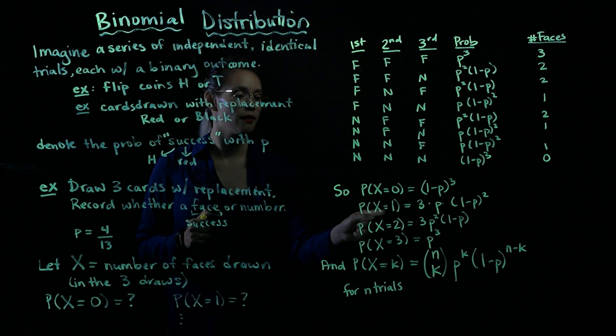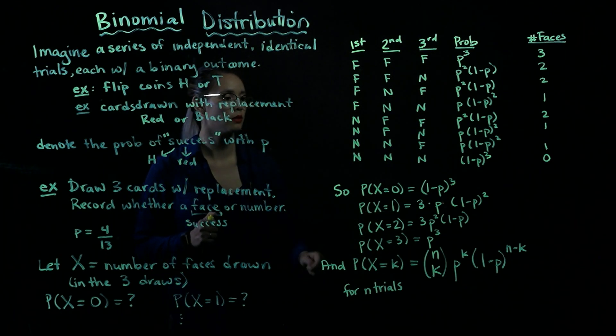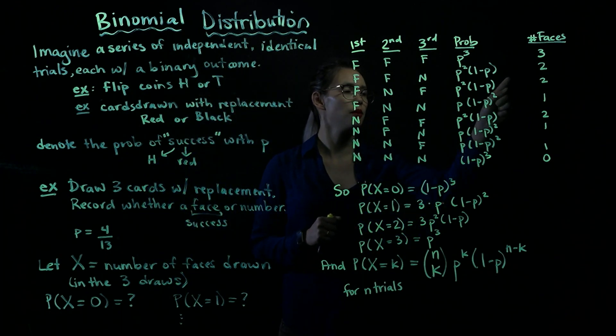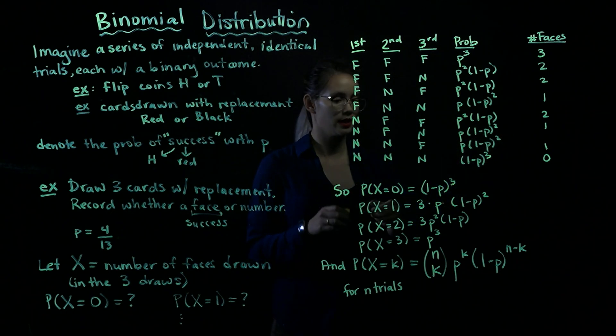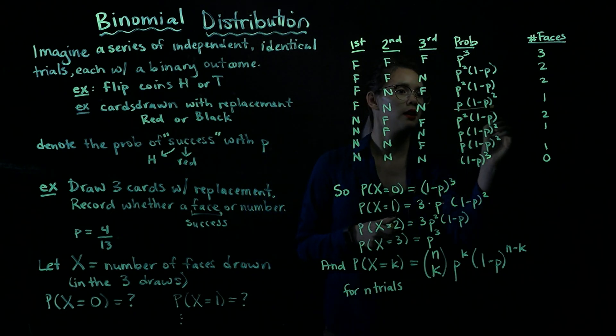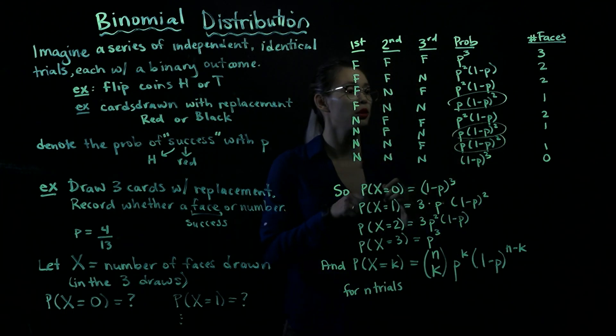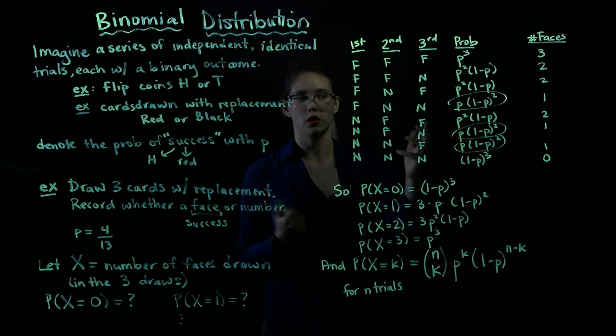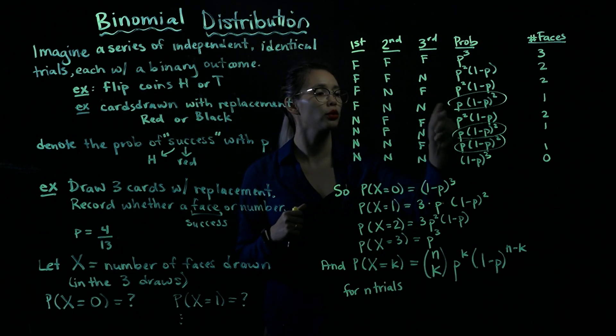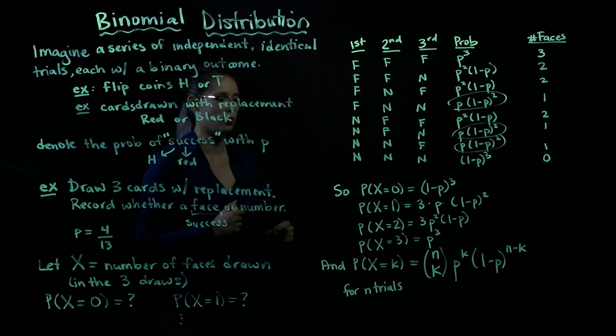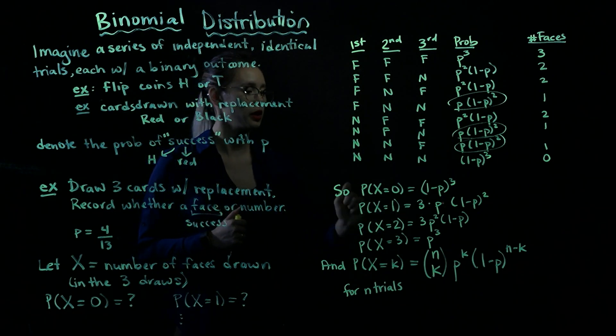Probability that we have exactly one face, well, let's add up all the different ways. So exactly one face, that's this one, and this one, and this one. So add up those three probabilities, and they're all the same probabilities. So we have three times P times one minus P squared, which is what we wrote here.